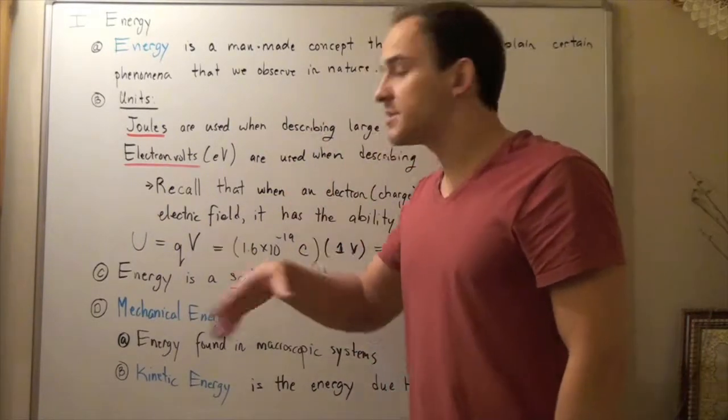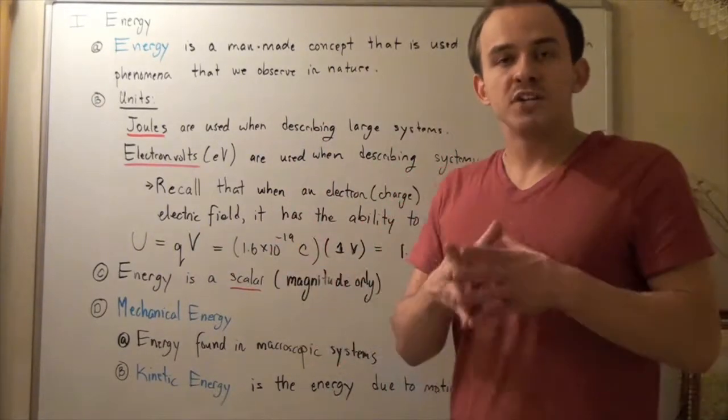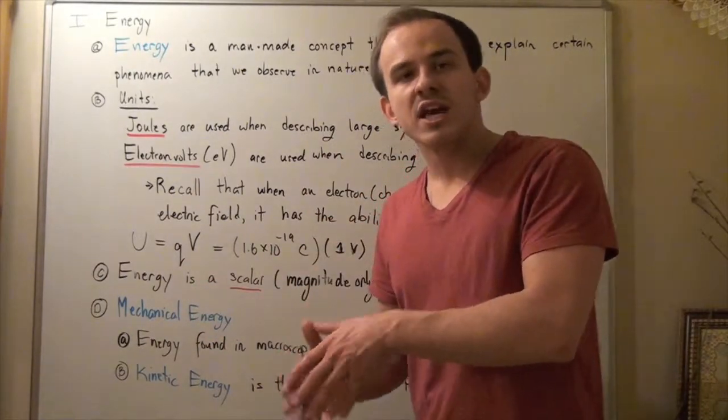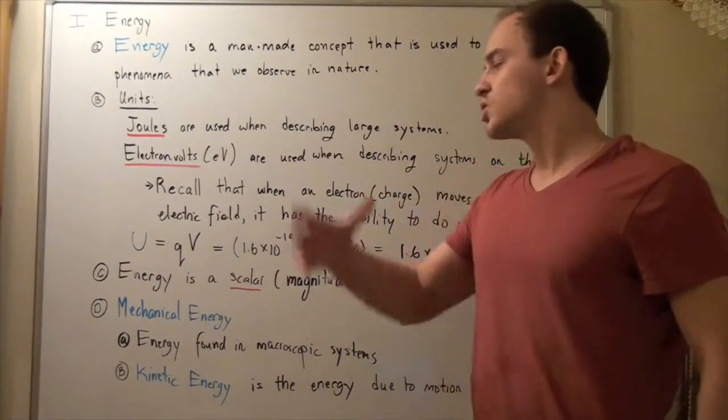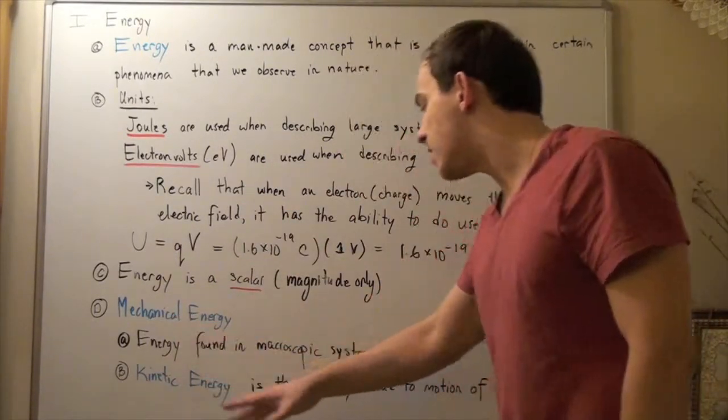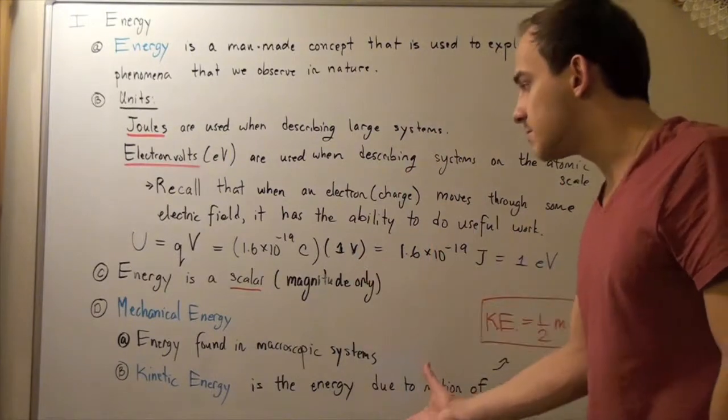Now, there are different types of energies that exist. We could break down all energies into two types, mechanical energy and non-mechanical energy. So, let's begin with mechanical energy. Now, mechanical energy is simply the energy found in macroscopic systems.